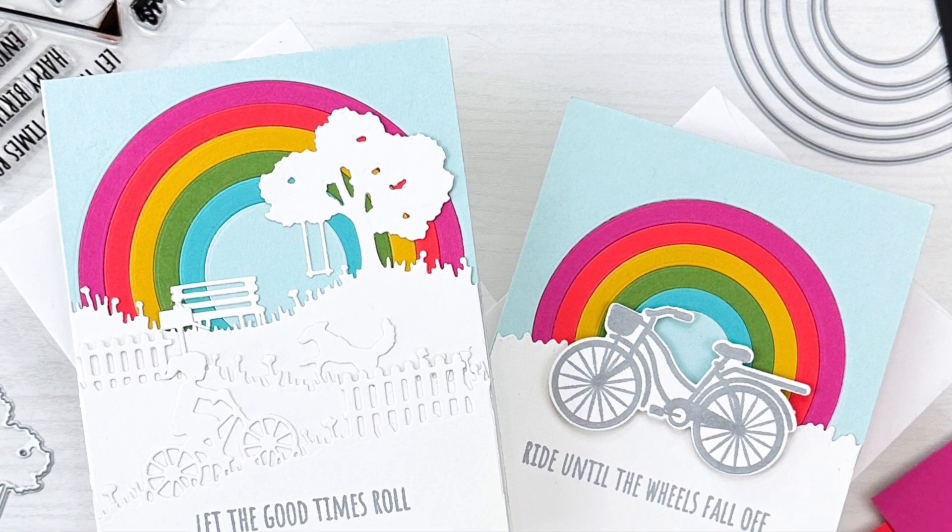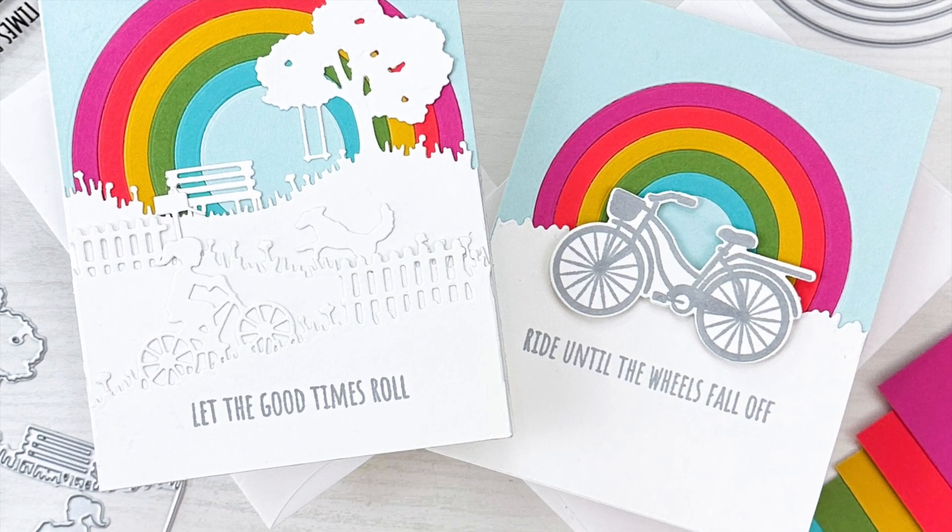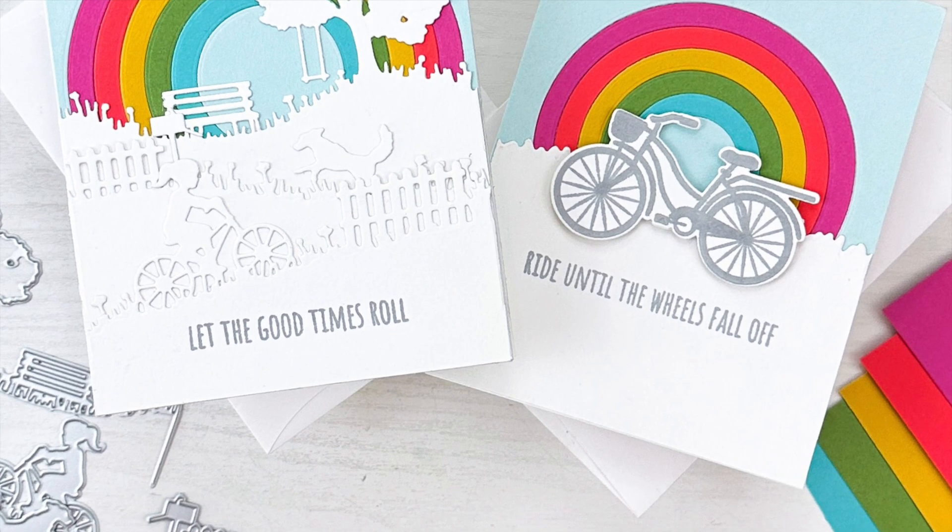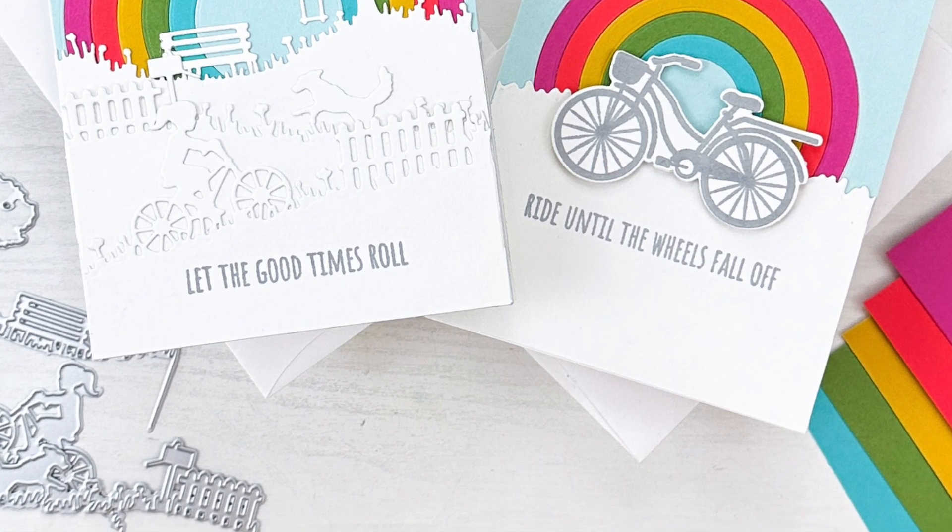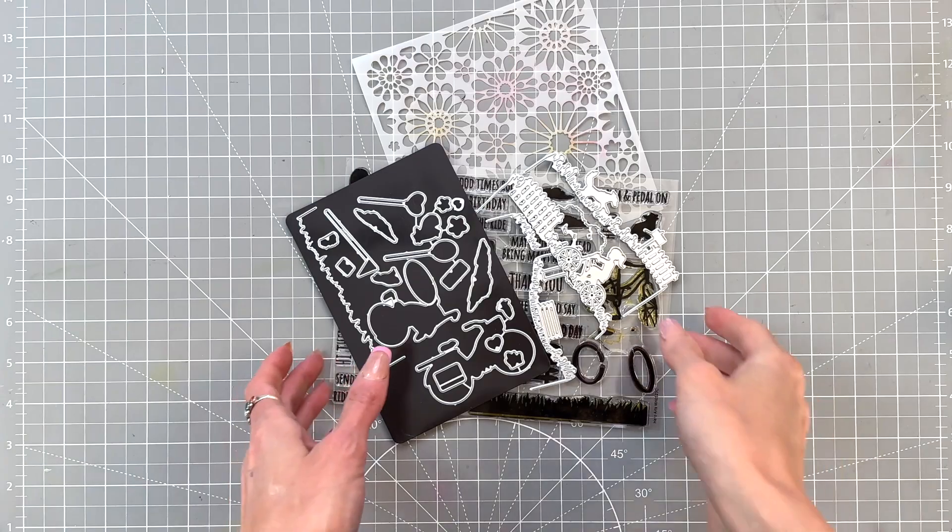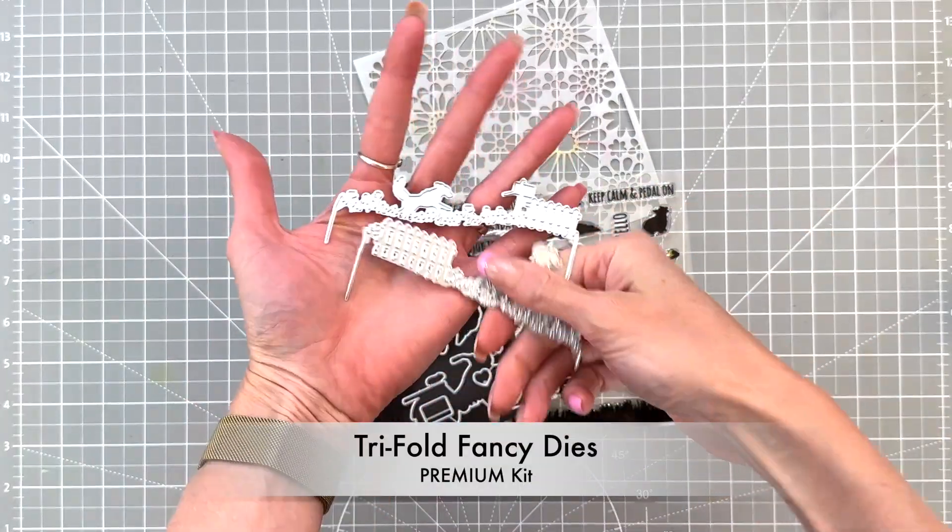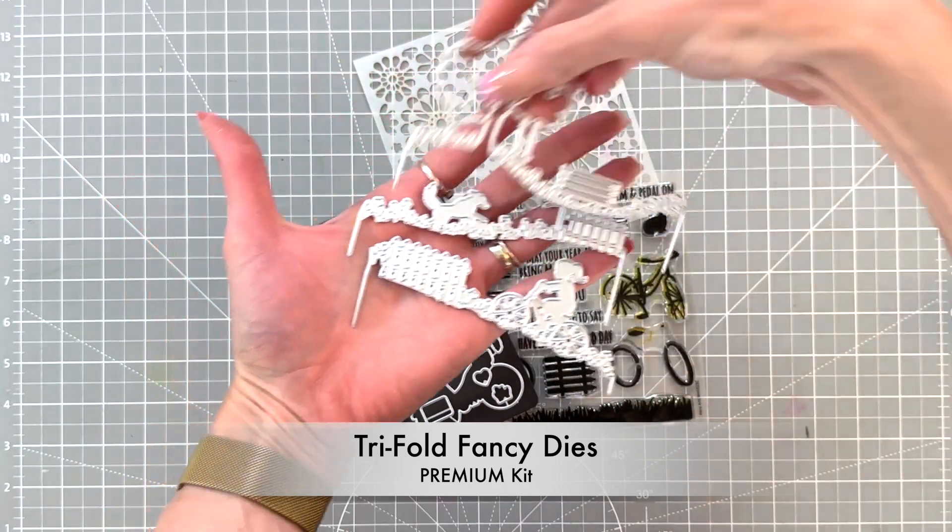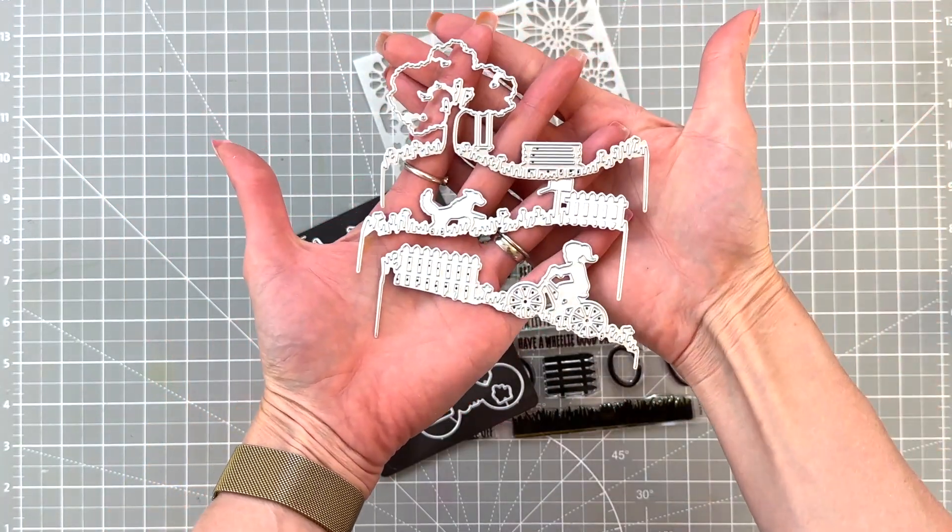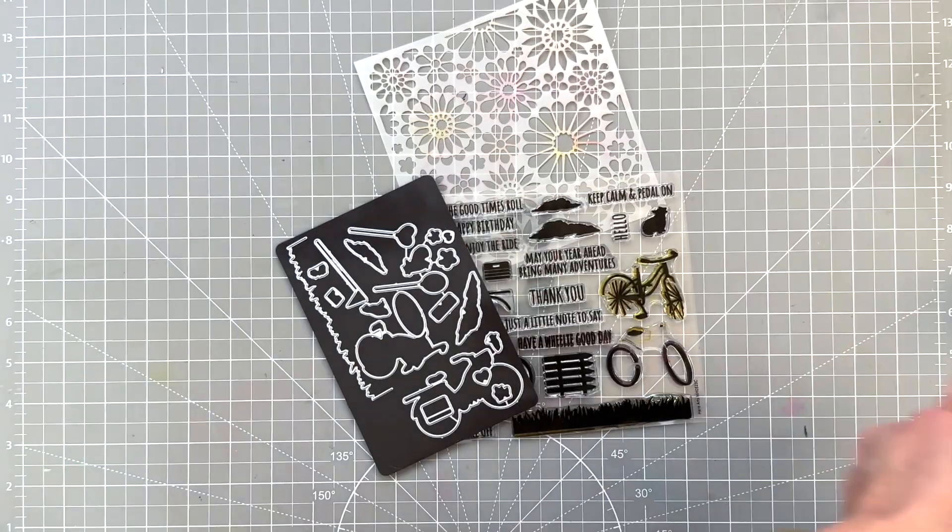I'll also share this bonus card created with the stamps and dies included in the classic kit, also paired with the inlay rainbow background. We're going to start by taking a quick look at all of the stamps, dies, and stencils included in the premium kit, mainly these trifold fancy dies.